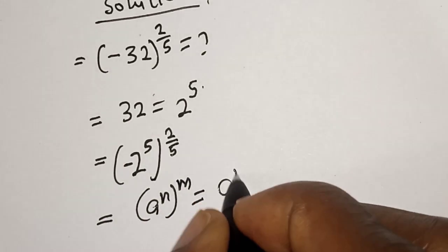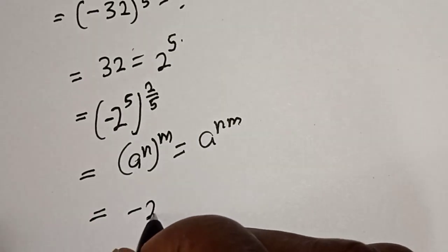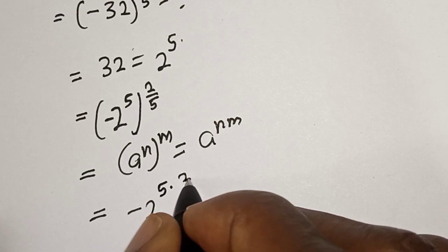Then this is minus 2 raised to power 5 multiplied by 2 over 5.